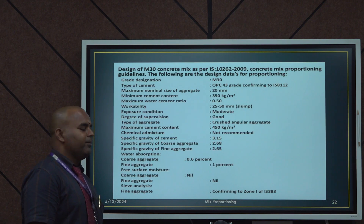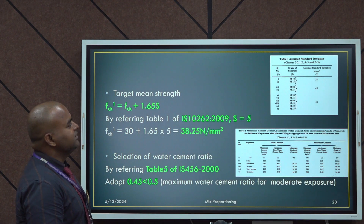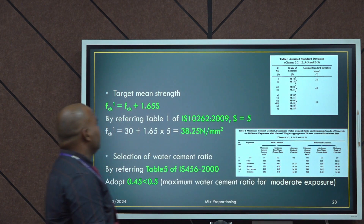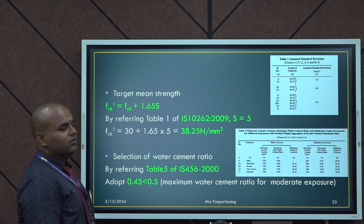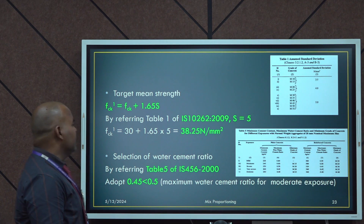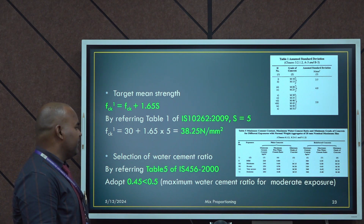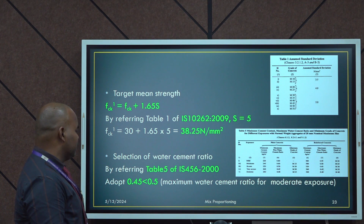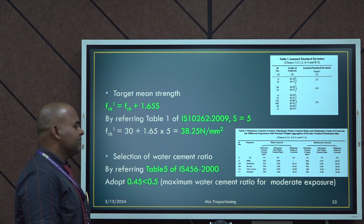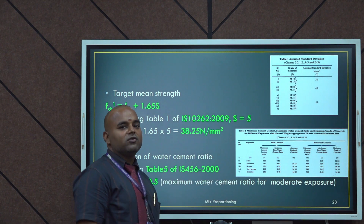Specific gravity of coarse aggregate is 2.68, specific gravity of fine aggregate is 2.65, water absorption of coarse aggregate is 0.6%, fine aggregate is 1%. Free moisture content for both coarse aggregate and fine aggregate is nil. Sieve analysis shows the fine aggregate is conforming to Zone 1 based upon IS 383. For the target mean strength, FCK' = FCK + 1.65S. Referring to Table 1 of IS 10262-2009, the standard deviation value is 5, so FCK' = 30 + 1.65 × 5 = 38.25 N/mm². For water cement ratio, from Table 5 of IS 456-2000, we adopt 0.45, which is less than the maximum of 0.5 for moderate exposure.